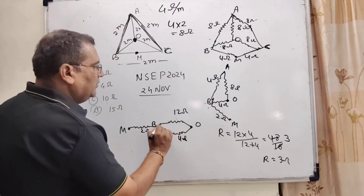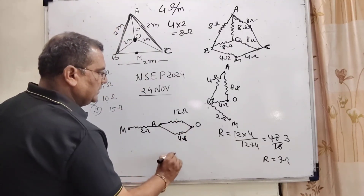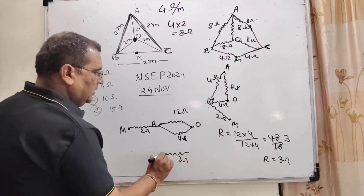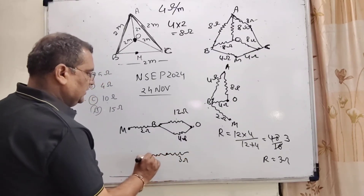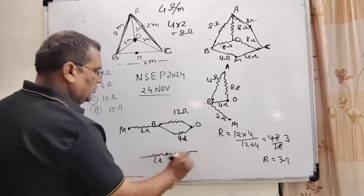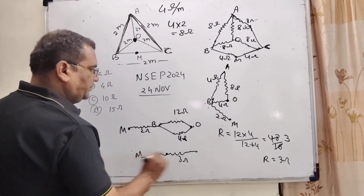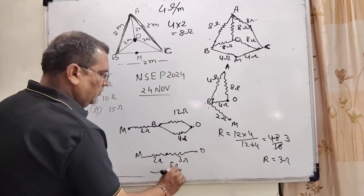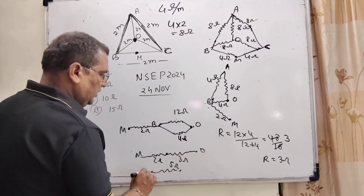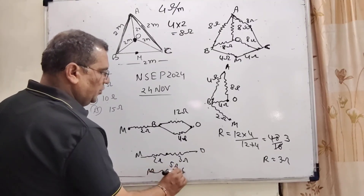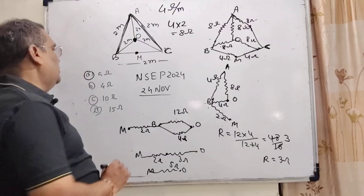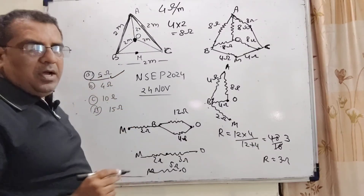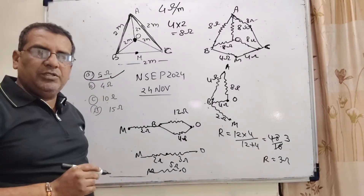The net resistance between B and O is 3 ohm, and with the 2 ohm segment to M, the total net resistance from O to M is 5 ohm. The correct option is A — 5 ohm.